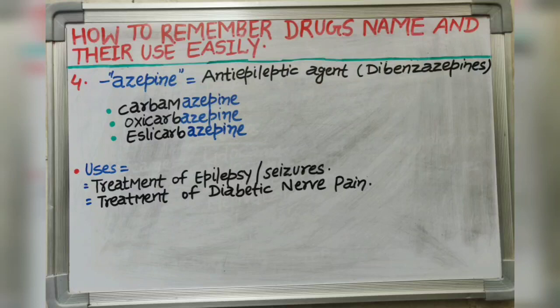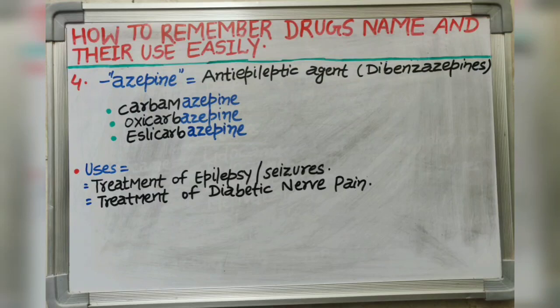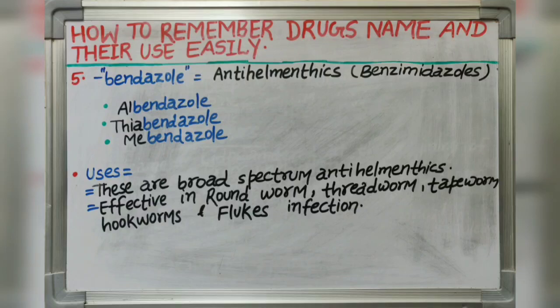Fourth suffix is -azepine. Azepine indicates anti-epileptic agents. It belongs to the category dibenzazepines. Drugs like carbamazepine, oxcarbazepine and eslicarbazepine belong to dibenzazepines. It is used as treatment of epilepsy or epileptic seizures and is also used in treatment of diabetic nerve pain.